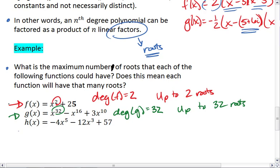And lastly, h of x, negative 4x to the 5th minus 12x cubed plus 57. The degree of h is 5, so I can have up to 5 roots.